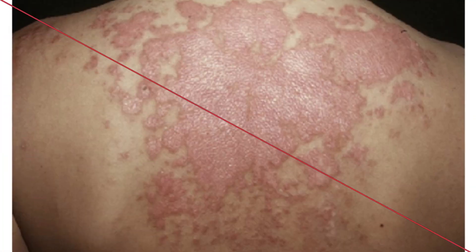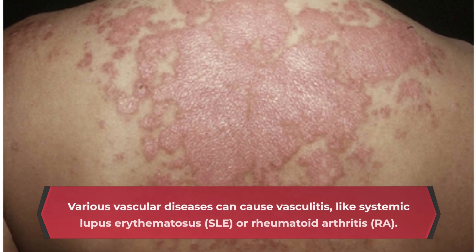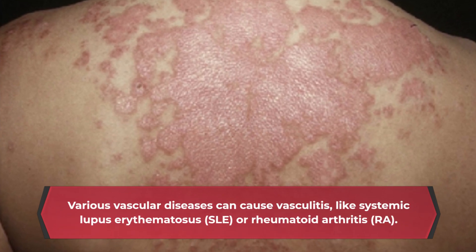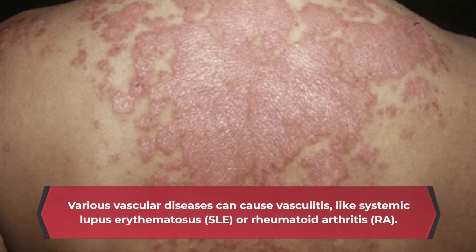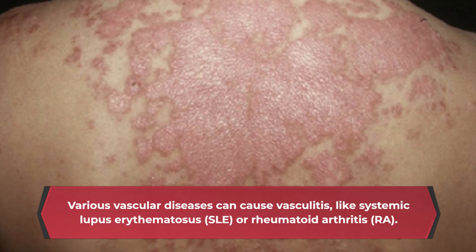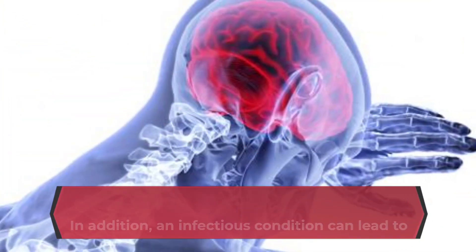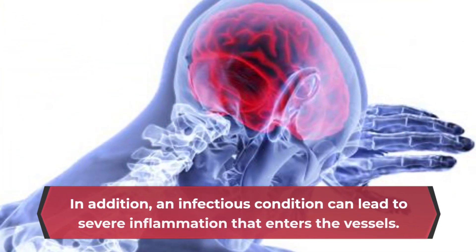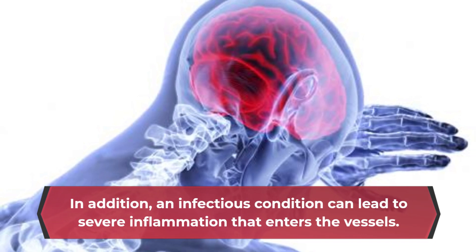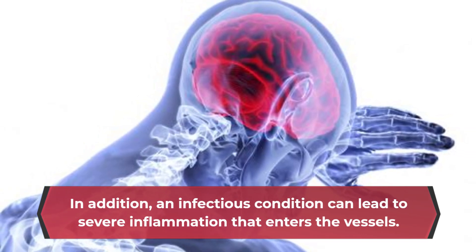Various vascular diseases can cause vasculitis, like systemic lupus erythematosus (SLE) or rheumatoid arthritis (RA). In addition, an infectious condition can lead to severe inflammation that enters the vessels.